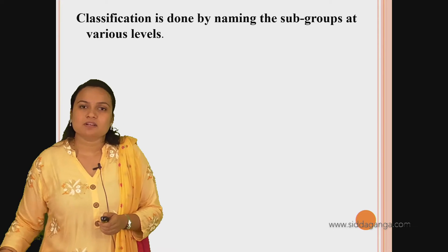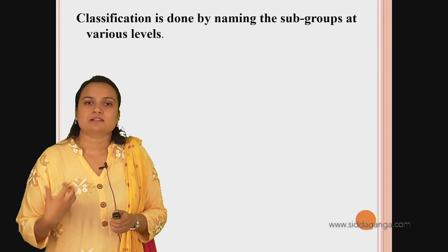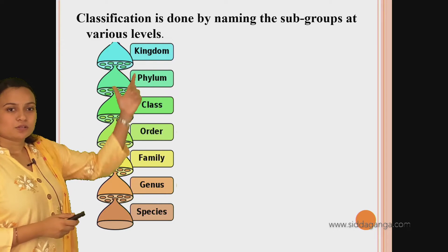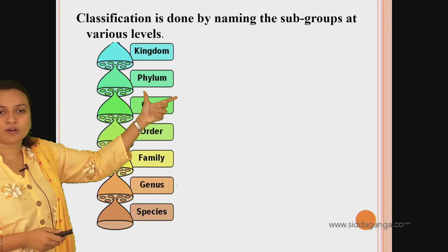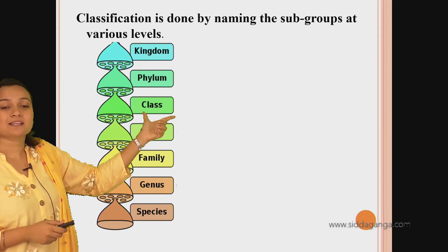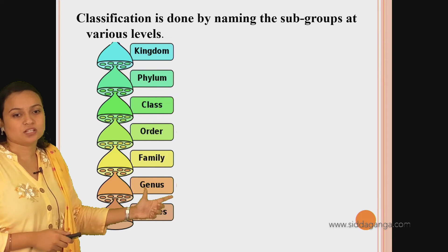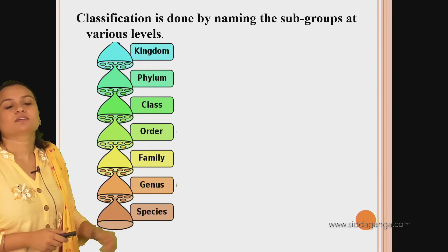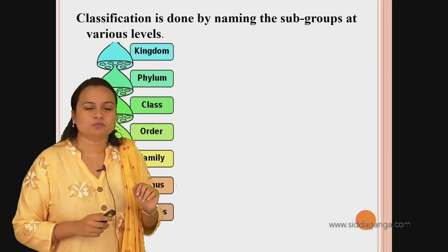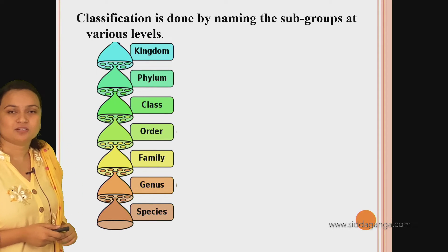There are different levels of classification, also called categories or ranks. The sequence is: kingdom is divided into phylum, phylum is divided into class, classes are divided into orders, orders are divided into family, family into genus, and genus into species. This is the sequence of classification.